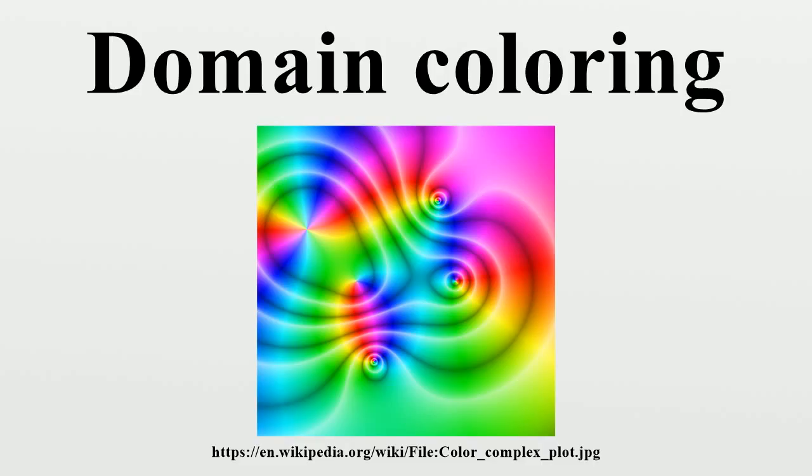The arrangement of hues is arbitrary, but often it follows the color wheel. Sometimes the phase is represented by a specific gradient rather than hue.